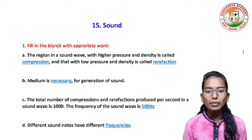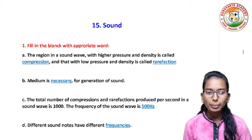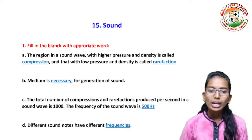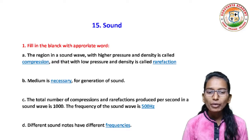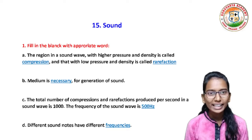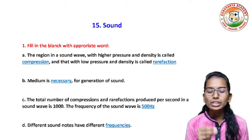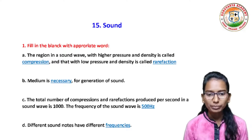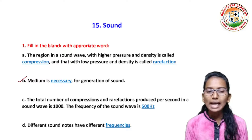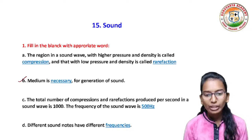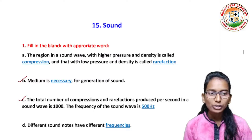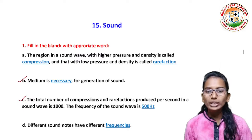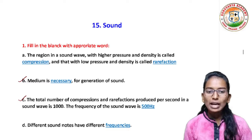First question: Fill in the blank with appropriate words. The region in a sound wave with higher pressure and density is called dash dash, and that with low pressure and density is called dash dash. Answer: The region in a sound wave with higher pressure and density is called compression, and with low pressure and density is called rarefaction. The medium is dash dash for the generation of sound — that is, necessary. The total number of compressions and rarefactions produced per second in a sound wave is 1000. The frequency of the sound wave is dash dash. Answer: that is 500 Hz.